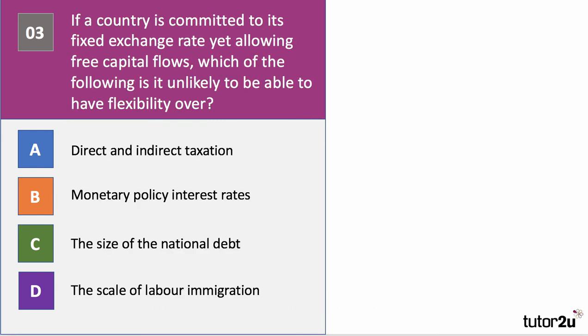Question three: if a country is committed to its fixed exchange rate yet allows free capital flows, which of the following is it unlikely to have much flexibility over? Is it direct and indirect taxation, monetary policy interest rates, the size of the national debt, or the scale of labour migration? Press the pause button, have a think, and come back when you're ready.